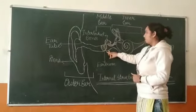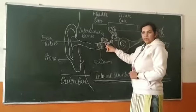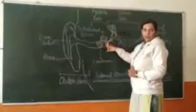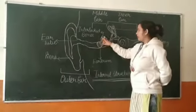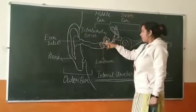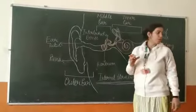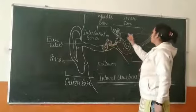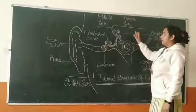After that, these vibrations will enter the middle ear where the three bones are present: malleus, incus, and stapes. From here, the amplitude of the vibrations will be amplified, and then the vibrations will enter the inner ear.